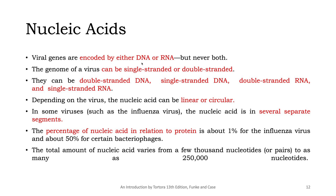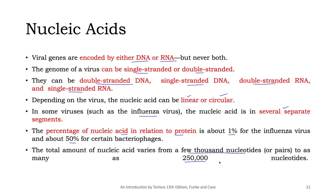As mentioned, the nucleic acid will be either DNA or RNA, and it can be single-stranded or double-stranded — so you can have double-stranded DNA, single-stranded DNA, double-stranded RNA, or single-stranded RNA. The nucleic acid can also be linear, circular, or segmented — for example, influenza has a segmented nucleic acid. The percentage of nucleic acid varies from about 1% in influenza virus to 50% in certain bacteriophages, and the total amount can range from a few thousand to 250,000 nucleotides.